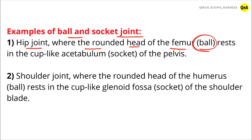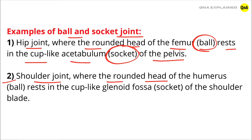The second one is the shoulder joint, where the rounded head of the humerus — the ball — rests in the cup-like glenoid fossa — the socket — of the shoulder blade.